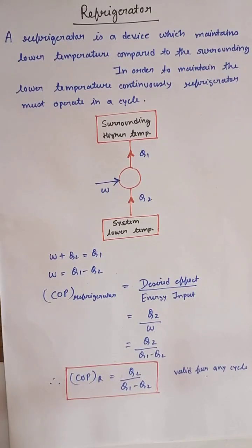A refrigerator is a device which maintains lower temperature compared to the surrounding. In order to maintain the lower temperature continuously, the refrigerator must operate in a cycle. This represents the flow diagram of a refrigerator.